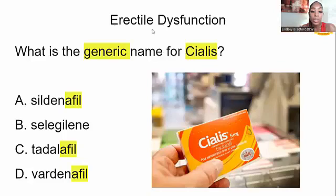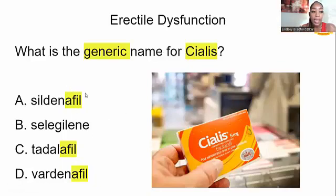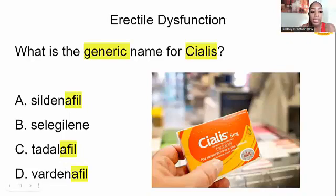This question is about erectile dysfunction. It asks for the generic name for Cialis, which is used to treat erectile dysfunction. Notice all the drugs in the answer choices ending in '-afil' — they are all used to treat erectile dysfunction. All three are not the correct answer alone, but letter C is correct, and the brand name for letter C is Cialis.